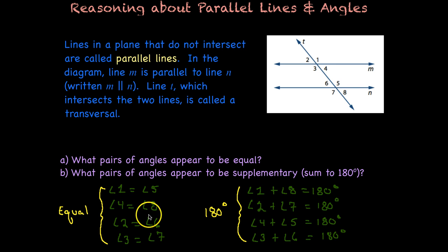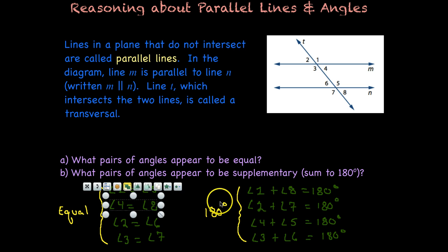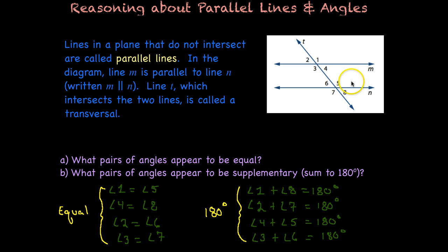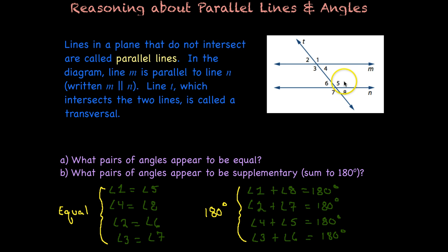Now we have a list of angles that appear to be equal and that appear to be supplementary. We made these assumptions through inductive reasoning, because the pattern seemed to make them equal or supplementary. But now we're going to use deductive reasoning to prove that it's true. We're going to pay especially close attention to angles one and five, four and eight, three and seven, and two and six. And as far as supplementary goes, we'll be looking at angles on the inside, like four and five, and three and six. In your practice, you'll look at some other angles.